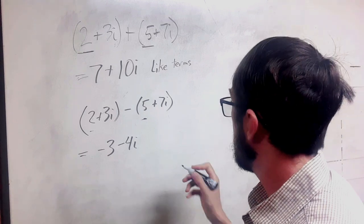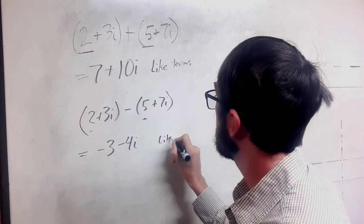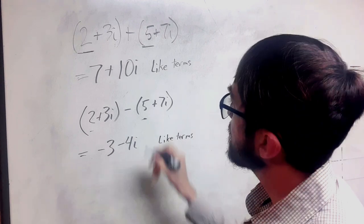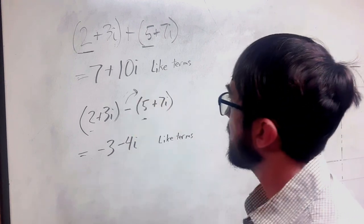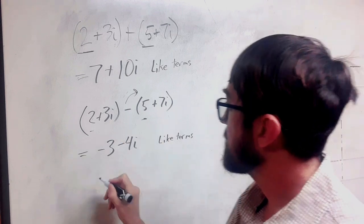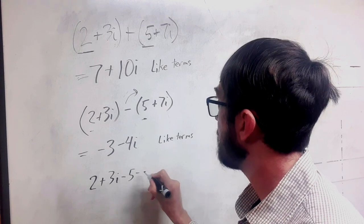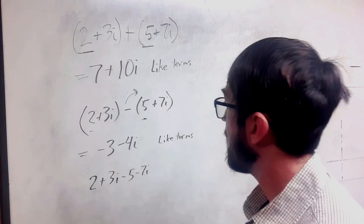So again, we want to look at like terms. But we also kind of have this distributive idea here. This is equivalent to saying 2 plus 3i minus 5 minus 7i.